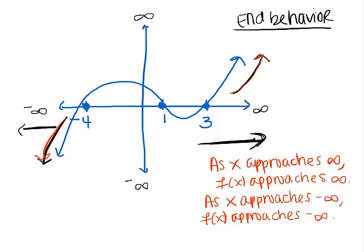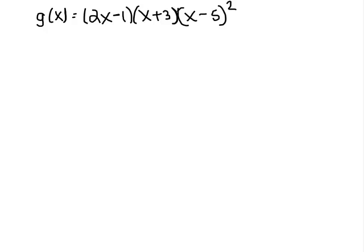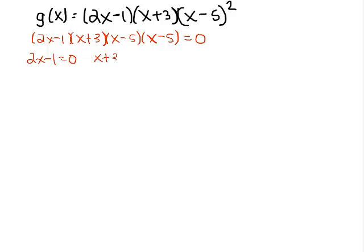Let's try another example. It looks a little bit different — I've got three factors, but one of them is squared. I'm going to rewrite this so all my factors are written out: 2x minus 1 times x plus 3 times x minus 5 times x minus 5. So this is quartic because it has 4 factors. Let's find the zeros by setting the whole function equal to 0. We only need to set x minus 5 equal to 0 once since I'll get the same answer both times. So my zeros are 1 half, negative 3, and 5.